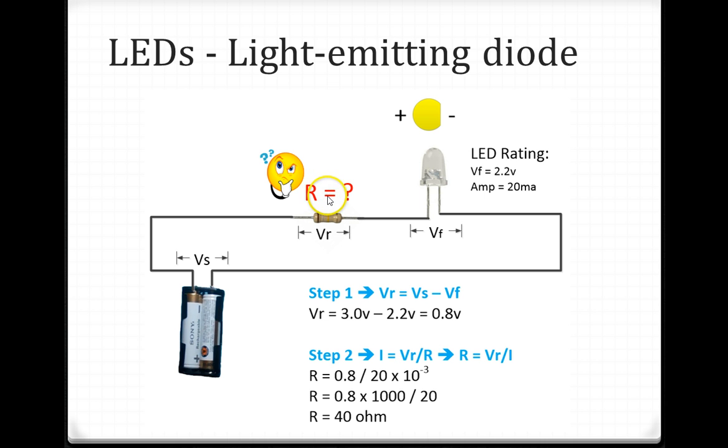You need to find out how much resistance you need to choose so that you don't pass more than 20 milliamperes current through the LED. VF is 2.2V, amps is 20mA. First, we need to find the voltage drop VR. VR equals VS minus VF, which is 3.0V minus 2.2V equals 0.8V. So the voltage drop across the resistor will be 0.8V.